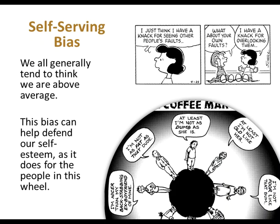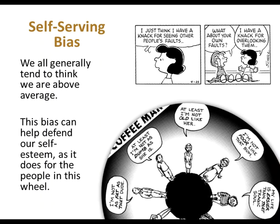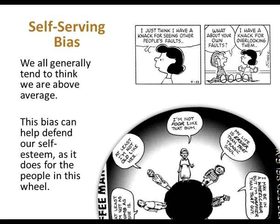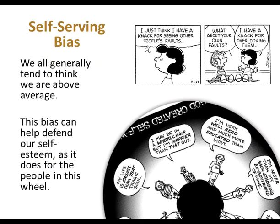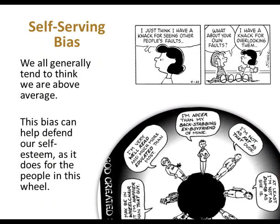Self-serving bias: we all generally tend to think we are above average. This bias helps defend our self-esteem — 'at least I'm not as dumb as she is,' 'I'm nicer than my backstabbing ex.' We are biased in favor of ourselves. In reality, we cannot all be above average — statistically that doesn't work — so we have a self-serving bias.